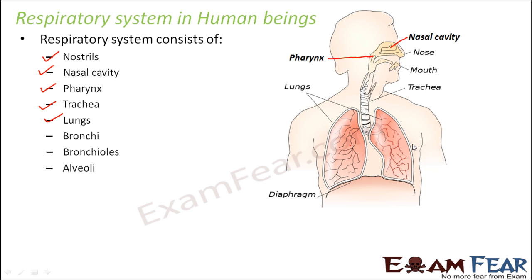Then you have the lungs, which occur in pairs — a right lung and a left lung. You also have bronchi, bronchioles, and alveoli. The trachea enters both lungs and branches off into thinner branches called bronchi. Bronchi further divide into bronchioles, and at the end of bronchioles are small structures called alveoli. When we breathe in, air reaches the alveoli through this path: nostrils → nasal cavity → pharynx → trachea → bronchi → bronchioles → alveoli.